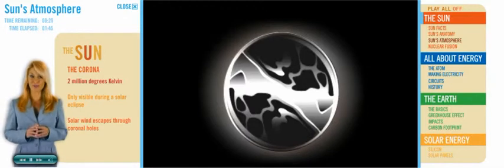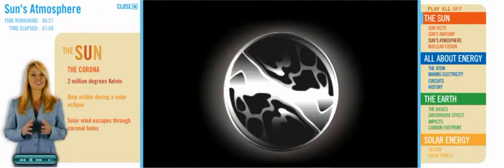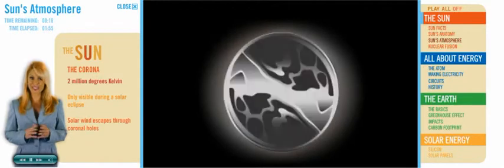Here you notice bright areas and dark spots. The brighter the area, the hotter the temperature. The dark areas are called coronal holes, and they're thought to be where particles of the solar wind escape.